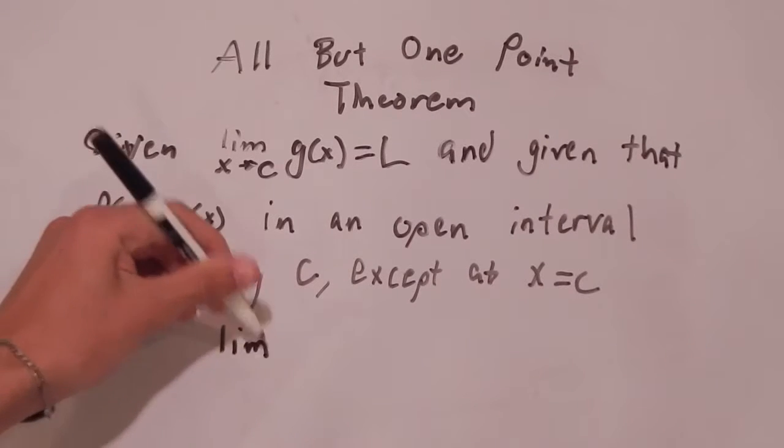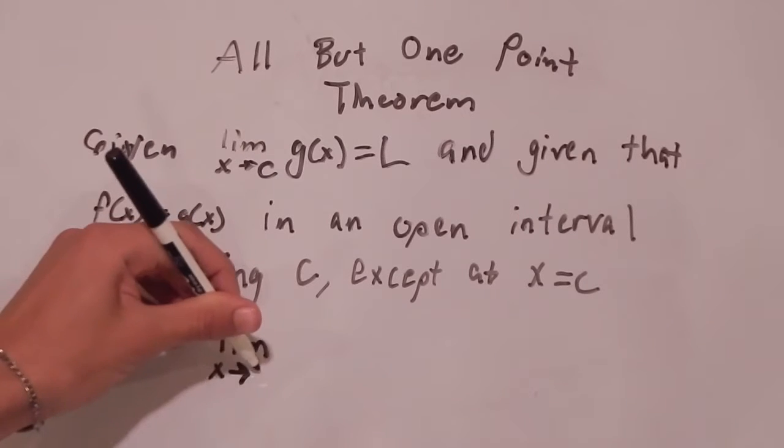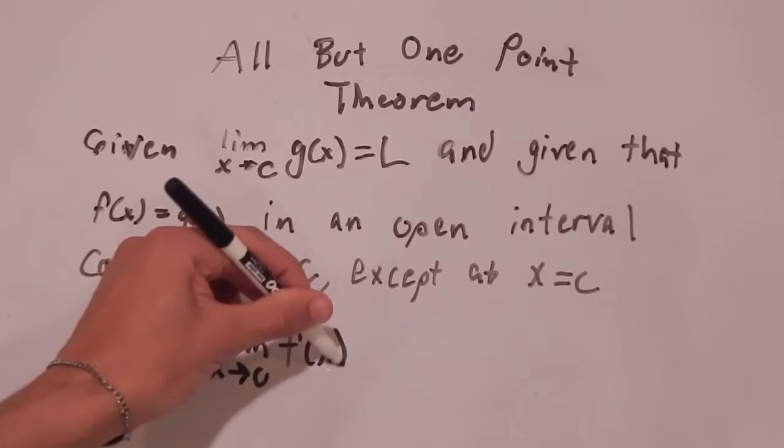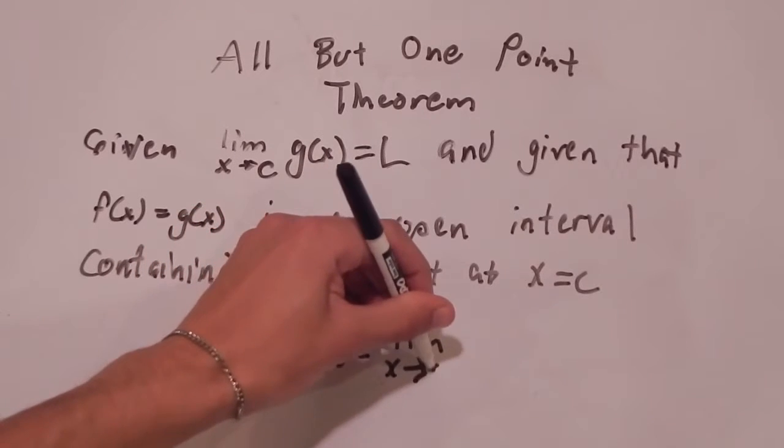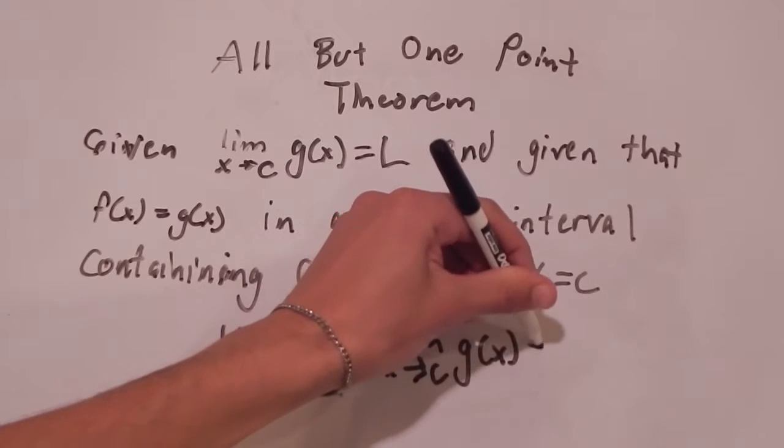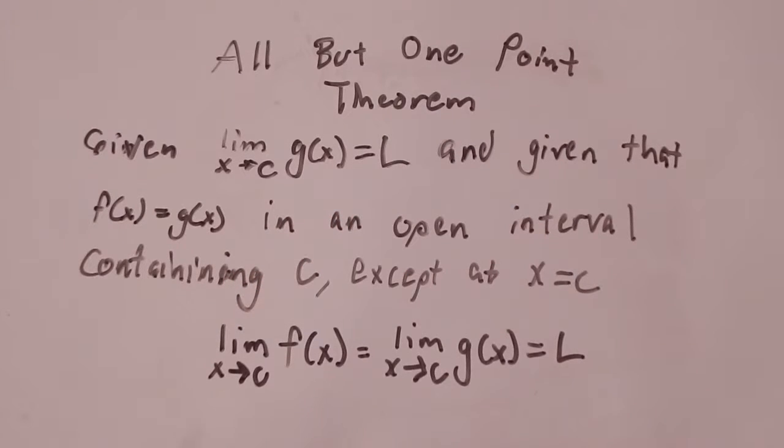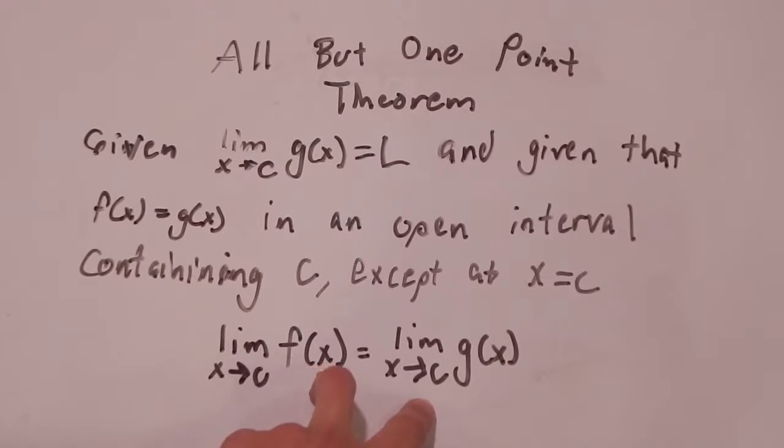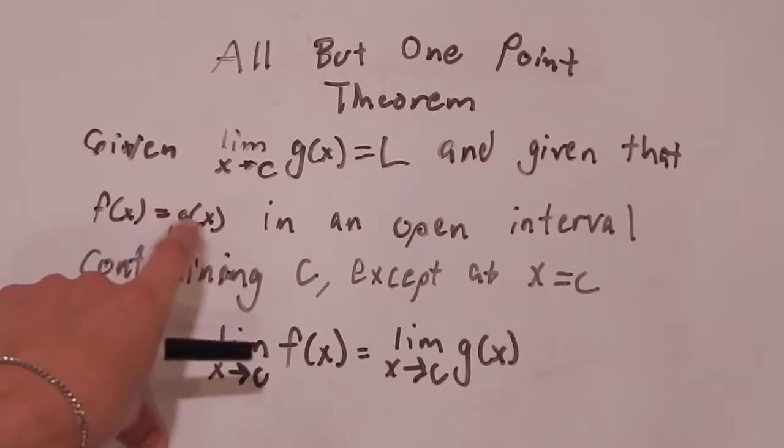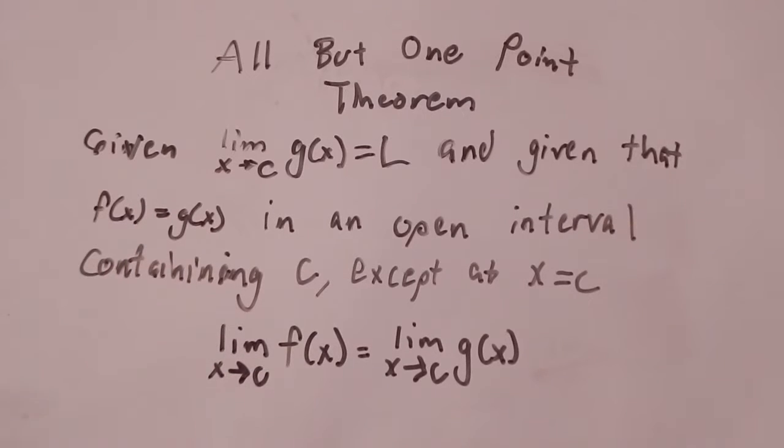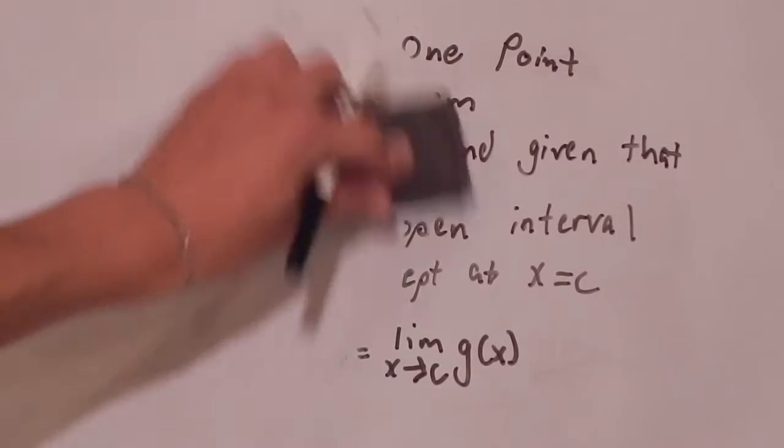So given this limit exists and given that these two functions are equal around C except at C, then the all but one point theorem states that the limit as X approaches C of F of X is equal to the limit as X approaches C of G of X is equal to L. But that last part isn't really important right now. The only part that's important is proving that these two limits are equal to each other, even though at the point that they're looking at C, the functions themselves do not agree on. Even though the functions do not agree on C, the limits do agree. So let's go on and start proving it.